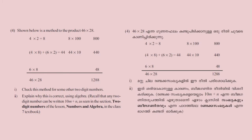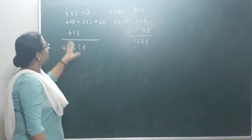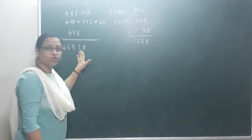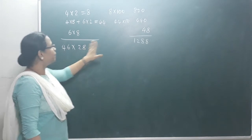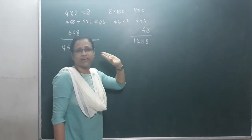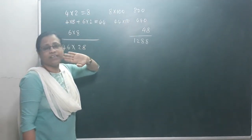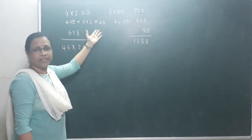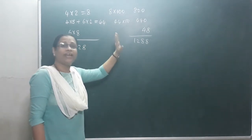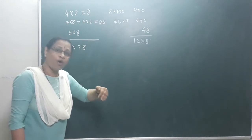In this practice problem, we are going to do the last problem — the fourth question. Show below is the method to find the product of 46 and 28. Check this method for some other two-digit numbers. Explain why this is correct using algebra. We have two numbers: 46 into 28, and their product is 1,288. This is the distribution method. You can check this with other two-digit numbers, then explain it as algebra.